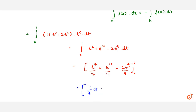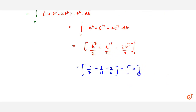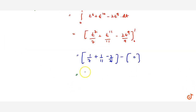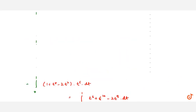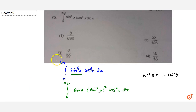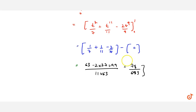Now we put the limits. Substituting 1 gives 1/7 plus 1/11 minus 2/9. Substituting 0 gives zero. Taking the LCM and simplifying — the denominator is 693 and the numerator simplifies to 8 — so the answer is 8 upon 693, which matches the first option.